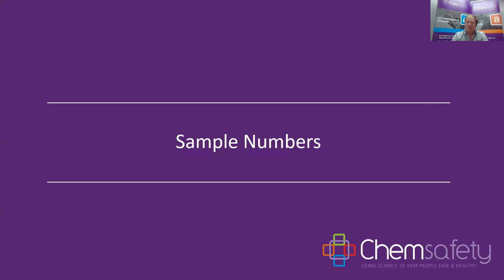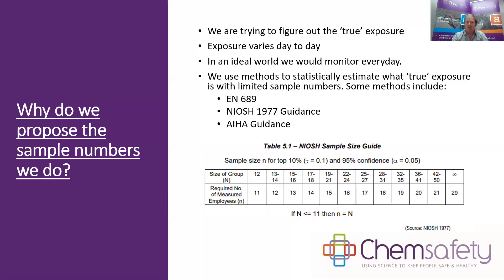Now, sample numbers — this is often what we get pushback from clients about. Why can't you just do one sample? It's a bit more complicated than that. We're trying to figure out what the true exposure of the workers is, but exposure varies day to day. In an ideal world, where price and time weren't an issue, we'd monitor every worker every day to figure out their true exposure — but that's just not practical. So we use methods to statistically estimate true exposure with much more limited sample numbers.